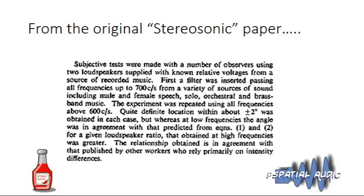This paragraph is from the original Stereosonic paper. Below 700 Hz in their subjective listening tests they got very good correlation with the mathematical model they put together — a full model of how the system worked in terms of intensities, how they added phases at the ears. Below 700 Hz the model worked very well, but above 700 Hz the model didn't predict where the image would appear subjectively.